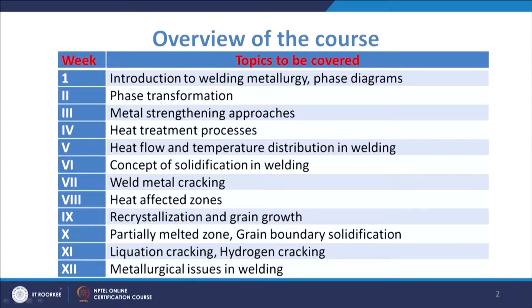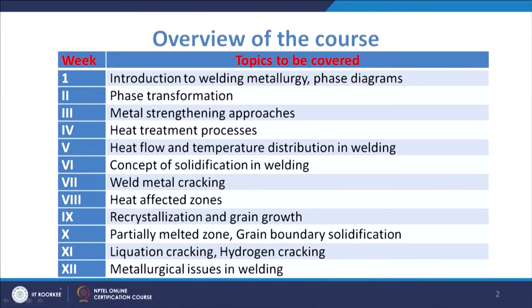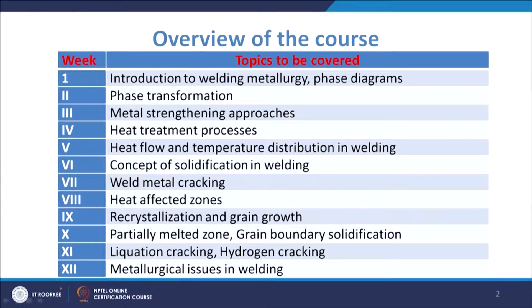Then we have phase transformation — you might also have some introductory knowledge about phase transformations, and we will talk about those processes. Metal strengthening approaches is another topic where we will talk about the different approaches to strengthen metals and alloys. Then we have heat treatment processes, where we know we try to enhance the mechanical properties of the material using different types of heat treatment.